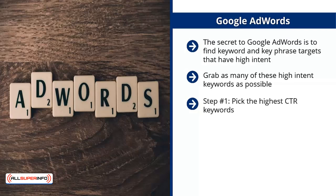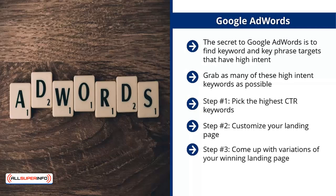Step number one: pick the highest CTR keywords. Step number two: customize your landing page — keep changing it so it converts at an optimal rate. Create completely different landing pages and use them for all the keywords that are working; let the test run for a week or two. Step number three: come up with variations of your winning landing page on an element-by-element basis — start with the headline, then the body, graphics, and call to action. Pick the winning variation that converts the most, and once you cannot improve an element's results further, move on to the next. Step number four: increase your daily budget and scale up.